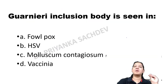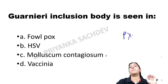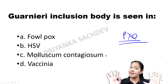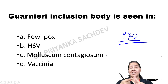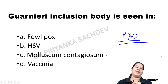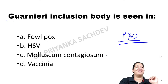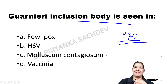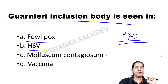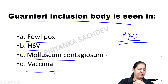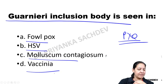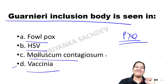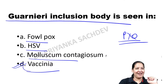MCQ: Guarnieri inclusion bodies are seen in which of the following? Options: fowlpox, HSV, molluscum contagiosum, vaccinia. This question is asked repeatedly in AIIMS, NEET-PG, FMGE, and other exams. The correct answer is vaccinia. Guarnieri bodies are the inclusion bodies of vaccinia virus.